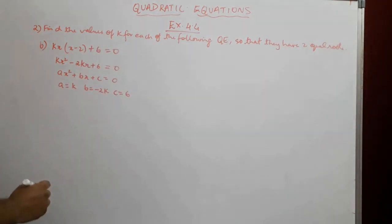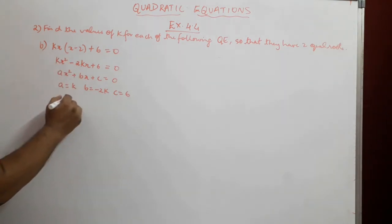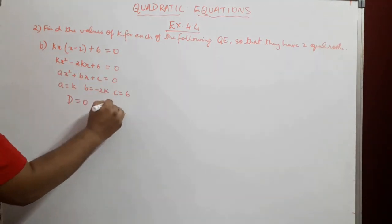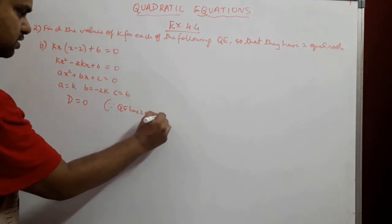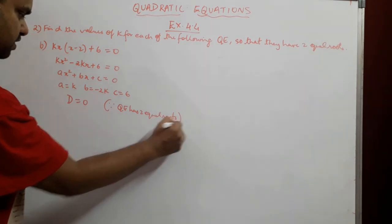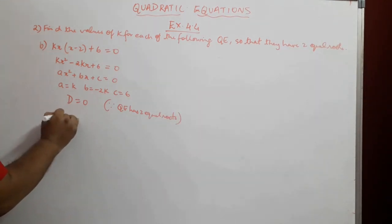Once again, we have been given that the quadratic equation has two equal roots, which means D = 0. You can put over here: since quadratic equation has two equal roots.